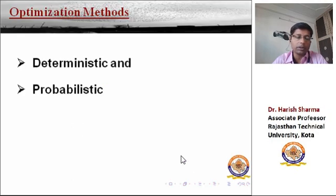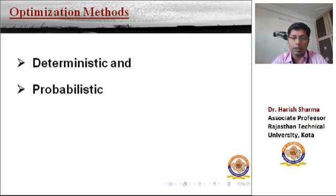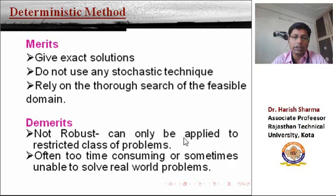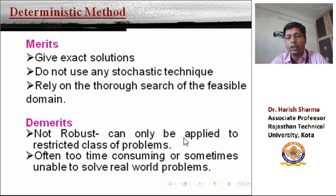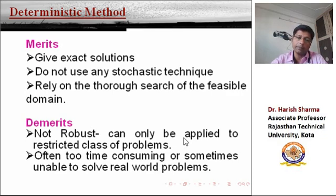There are two methods available to deal with optimization problems. One is the deterministic approaches, and the other is probabilistic approaches. The deterministic approaches are basically based on a set of steps in which, for a fixed set of input, the solution or output will be exactly the same in every run.